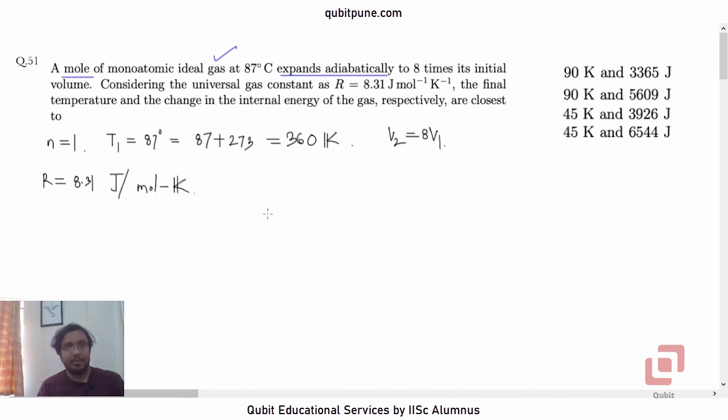We need to find T2, the final temperature, and also delta U, the change in internal energy of the gas.